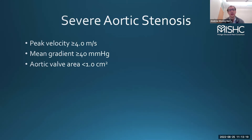These three measurements form the major assessment of aortic stenosis severity. The criteria for severe AS are: peak velocity greater than or equal to 4 meters per second, mean gradient greater than 40 mmHg, or an aortic valve area less than 1.0 centimeters squared.